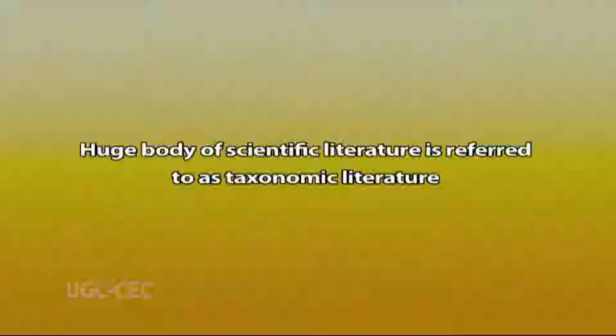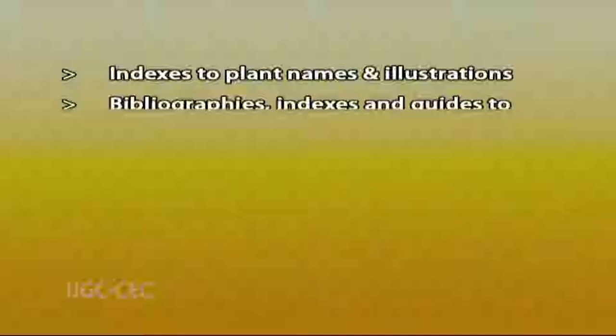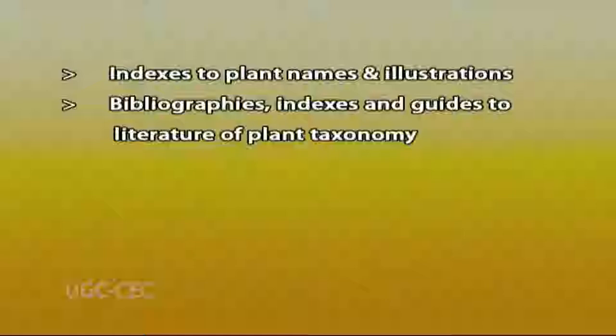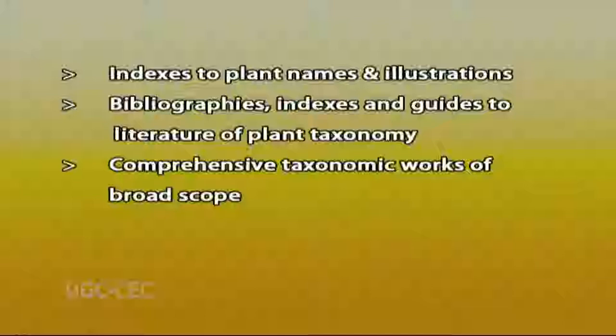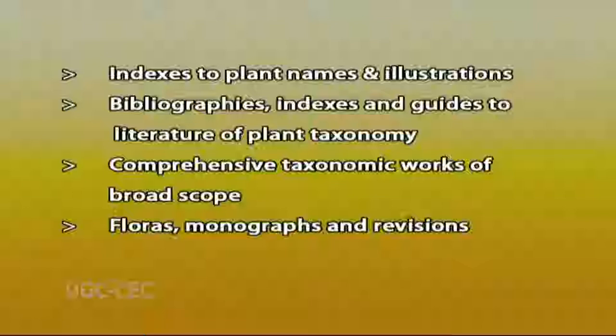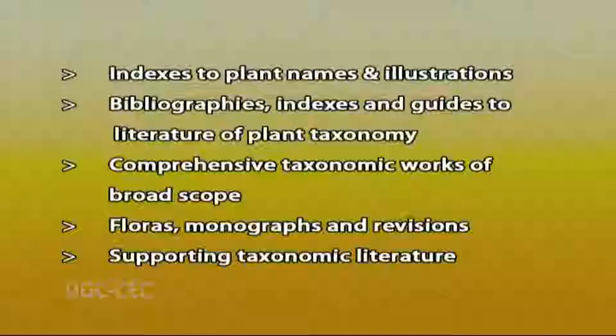The second part is the source of taxonomic literature, which will be much more detailed. The various forms of taxonomic literature can be discussed under five main headings: first, indexes to the plant names and illustrations; second, bibliographies, indexes, and guides to the literature of plant taxonomy; third, comprehensive taxonomic works of broader scope; fourth, floras, monographs, and revisions; and fifth, supporting taxonomic literature.